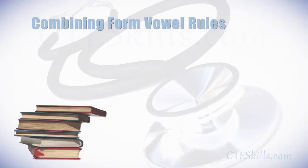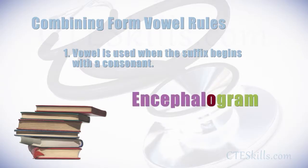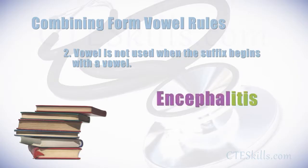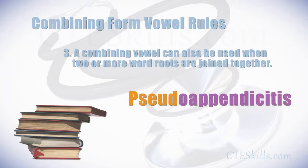Of course there are always exceptions, but the general rules are: a combining vowel is used when the suffix begins with a consonant, as with the word encephalogram. A combining vowel is not used when the suffix begins with a vowel, as in encephalitis. And a combining vowel can also be used when two or more word roots are joined together, such as with pseudo-appendicitis.